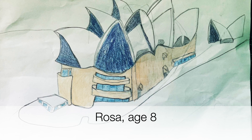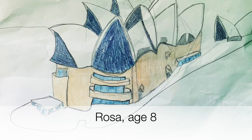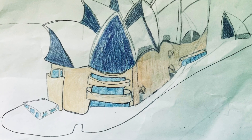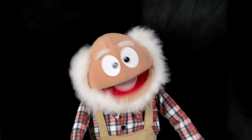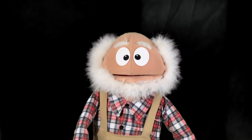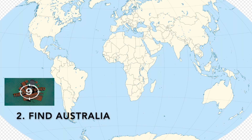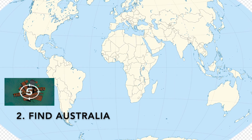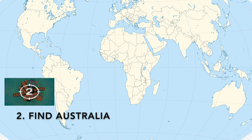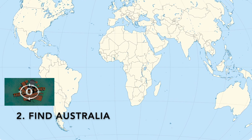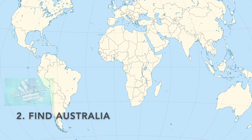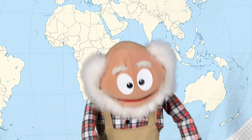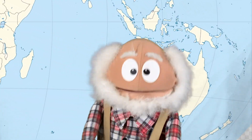Hello everybody! Check out this picture — it was drawn by our friend Rosa and it's the Sydney Opera House. Now Sydney is in the country of Australia. Can you find Australia on the map? Yes, there's Australia! Good job, and thank you Rosa for the amazing picture.